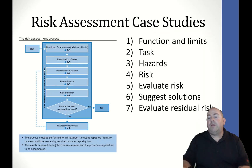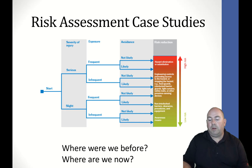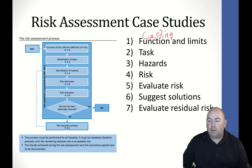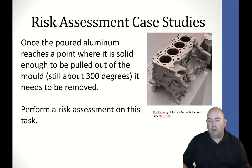Let's list the function and limits, the task, the hazards, the risk, evaluate the risk, suggest solutions, and evaluate the residual risk. Then let's look at where we are before and where we are now. The function is casting. The limits include 300 degrees and 45 parts per hour. These are machine limits that are important to us.